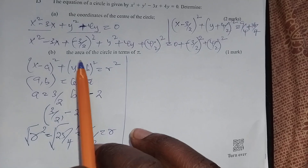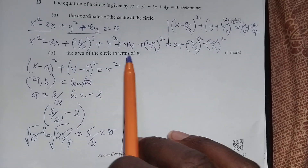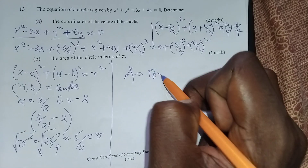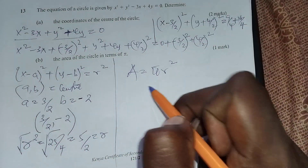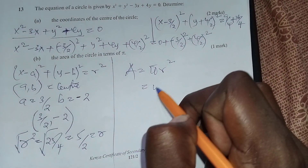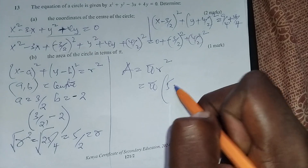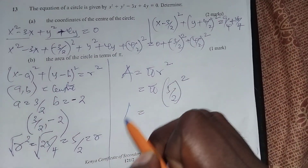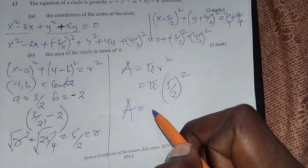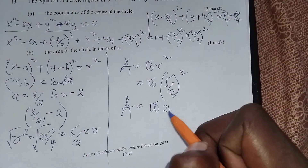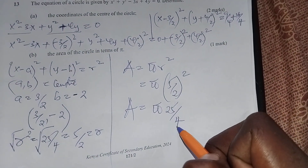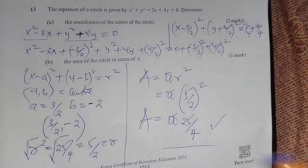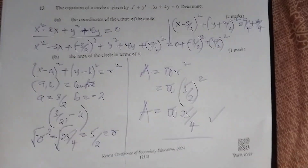In the next part they were asking for the area of the circle in terms of pi. Area equals pi r squared. The radius is 5 over 2, so the area will be pi times (5 over 2) squared, which is 25 pi over 4.